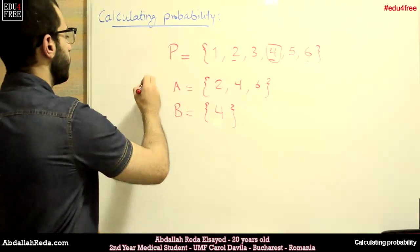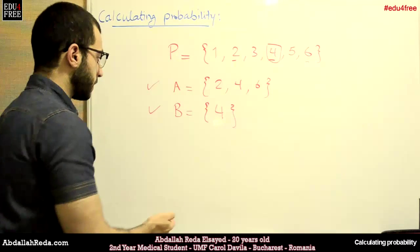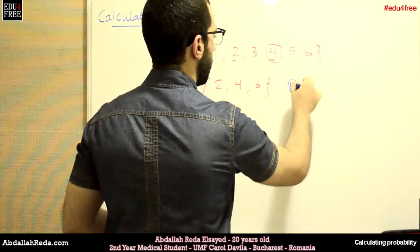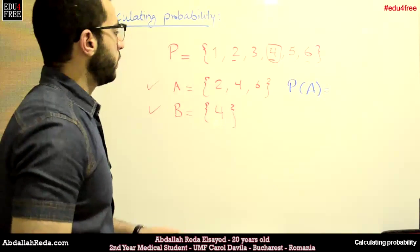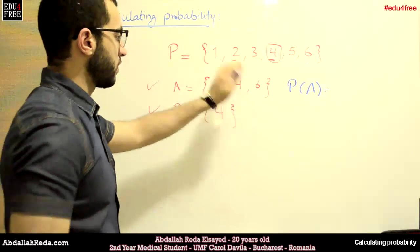So these are two events that we have. Now, when I say I want to calculate the probability of the event A, P(A) will equal what we do is that we sum the number of these probabilities, which is 3.